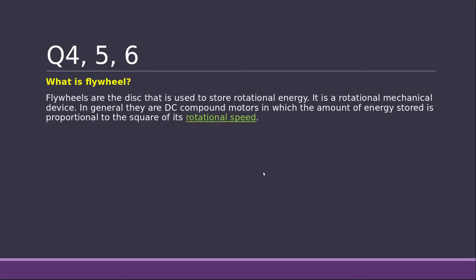What is a flywheel? Flywheel is nothing but a disc that is used to store rotational energy. Flywheel is a disc used to store rotational energy. It is a rotational mechanical device. In general, they are DC compound motors in which amount of energy stored is proportional to the square of its rotational speed. So we can store rotational energy in it and it is fundamentally DC compound motors.